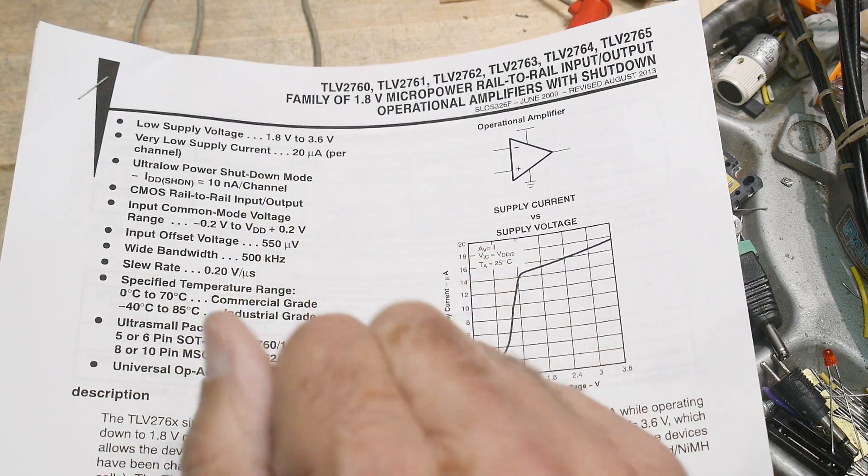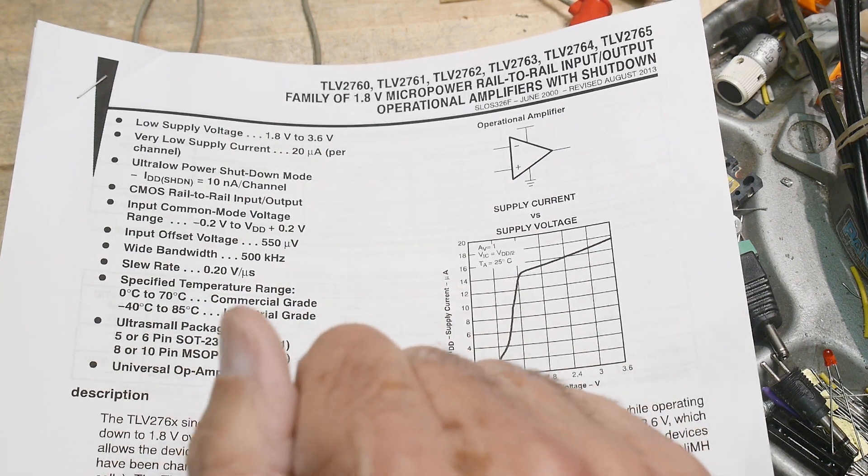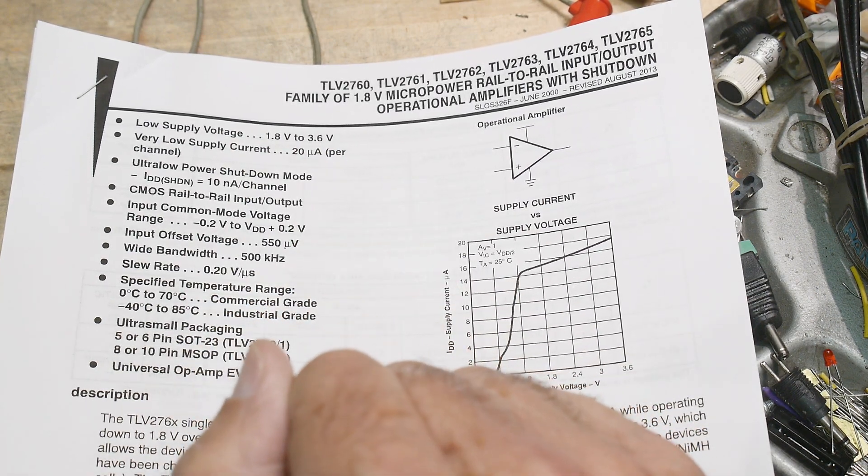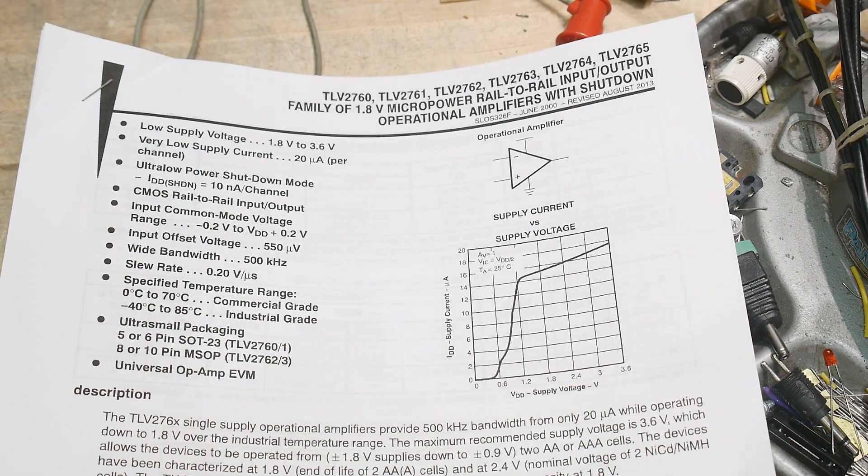What's not being used, switching is just sitting there at 10 nano amps. That's pretty wild. Yeah, but it's only a 500 kilohertz part, so ain't gonna get much speed out of it.